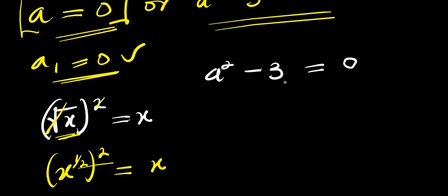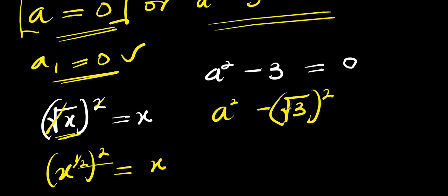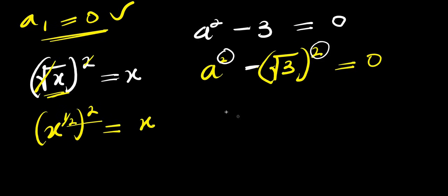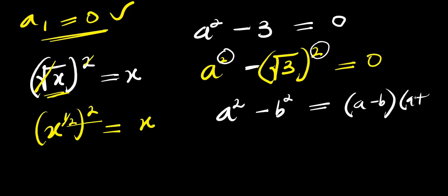Applying this identity, instead of writing just 3, we write it as the square root of 3 raised to the power of 2. So our expression becomes a squared minus (root 3) squared equals 0. At this point we can apply the difference of two squares, since we have a power of 2 on each term separated by a subtraction sign. The difference of two squares rule states that a squared minus b squared equals (a minus b)(a plus b).